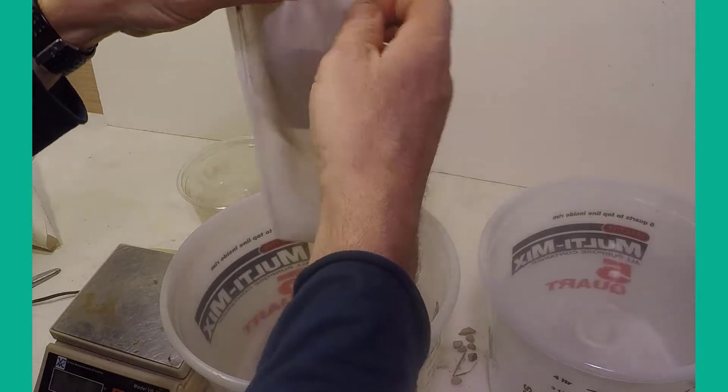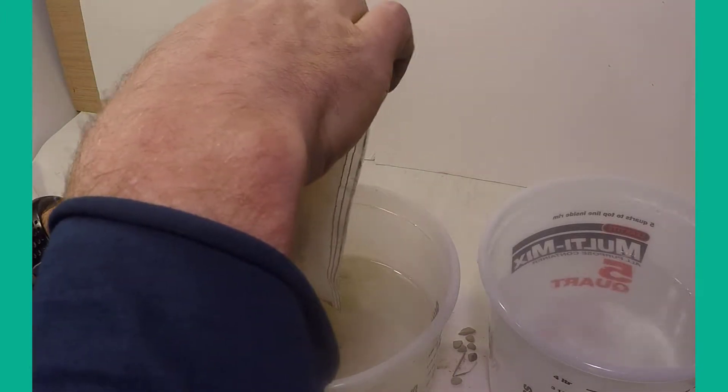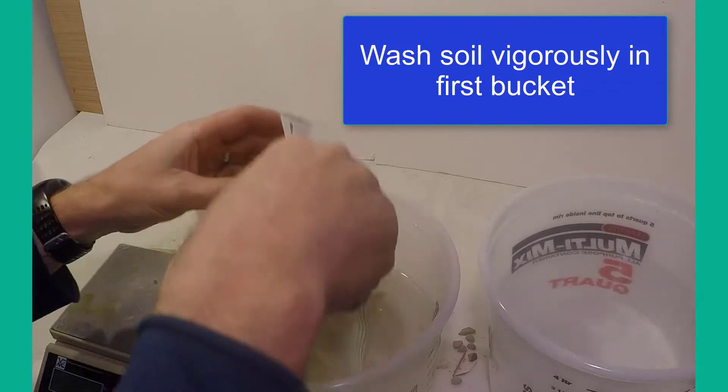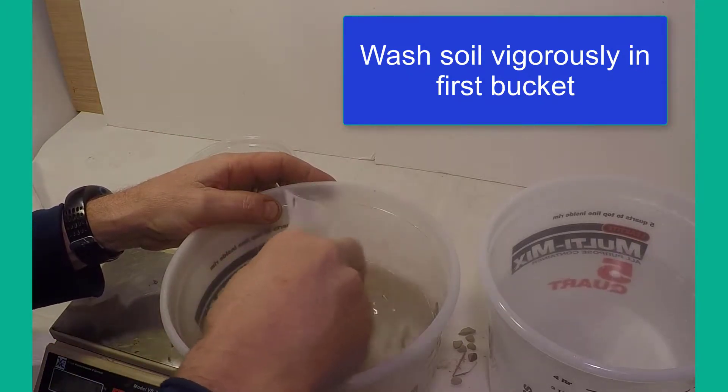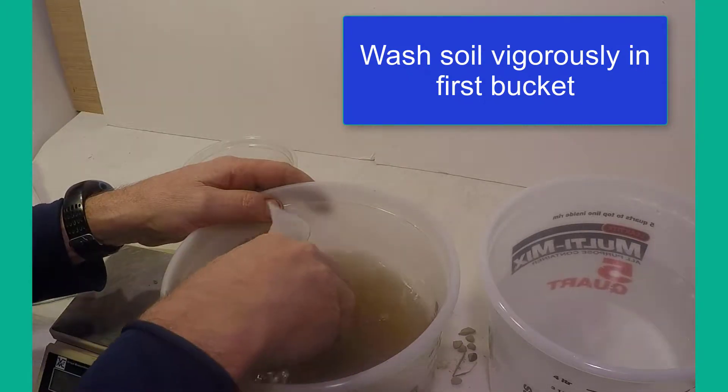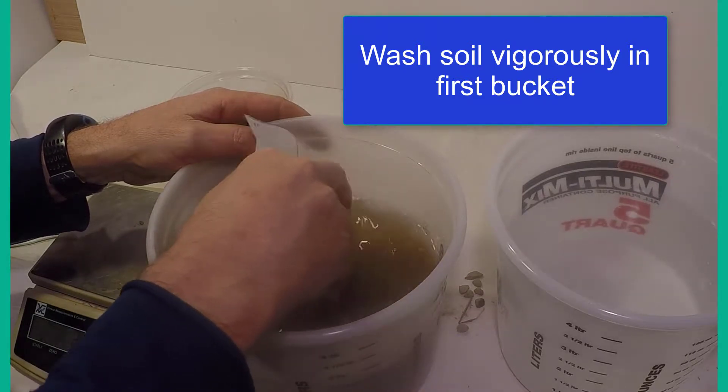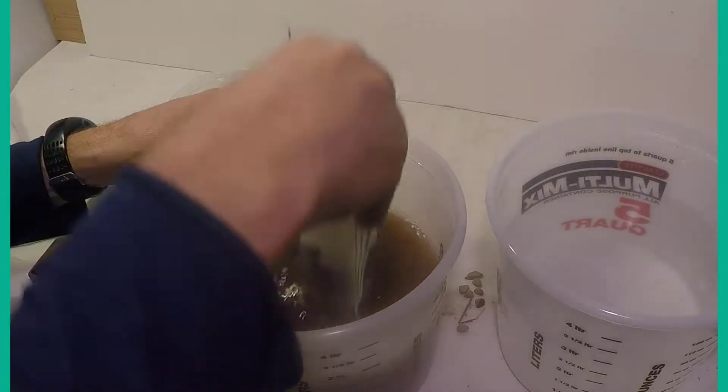Next, the soil is washed vigorously in the first bucket until only small stones and large residues are left in the sieve bottle, and some smaller residues and sand are left in the mesh bag. This may take a few minutes.